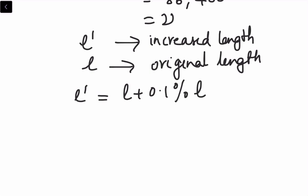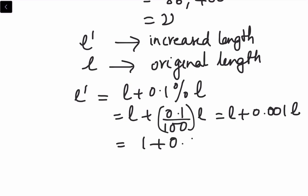That is equal to L plus 0.1% means divided by 100 into L. That gives L plus 0.001 into L. So L' equals (1 + 0.001)L - this is the new length.